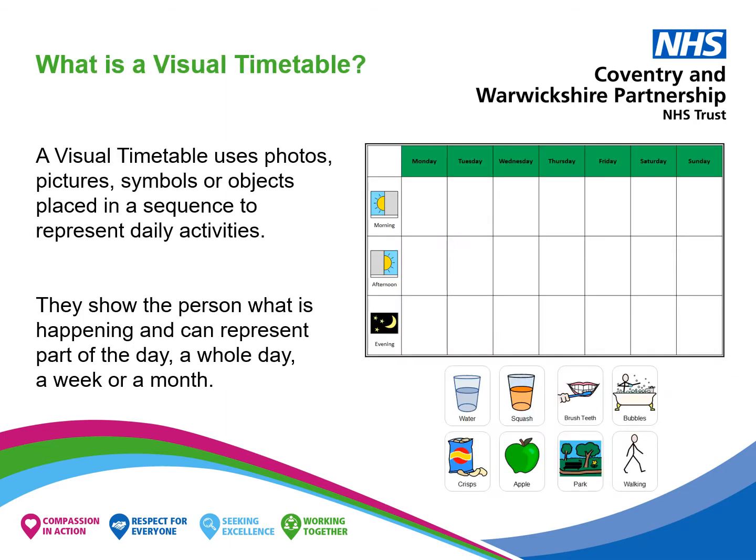What is a visual timetable? A visual timetable uses photos, pictures, symbols or objects placed in a sequence to represent daily activities. They show the person what is happening and can represent part of the day, a whole day, a week or a month.